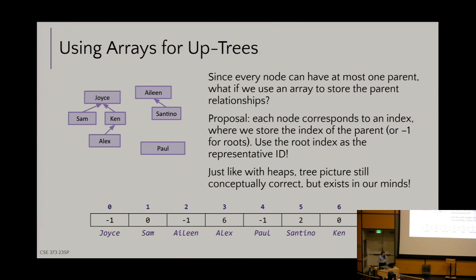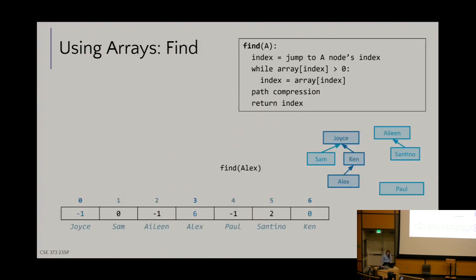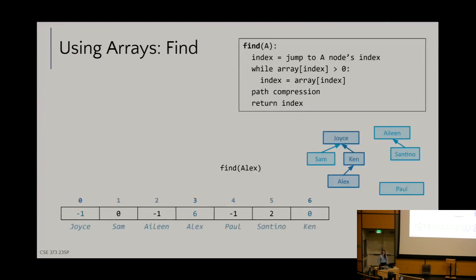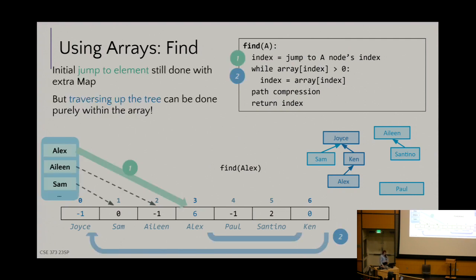For items with no parent — overall roots — we just put a negative number in the array slot. That's how we know we've hit the top of the tree, equivalent to checking if the parent field was null. And we can jam even more information in: instead of just negative 1 to indicate the overall root, we store negative 1 times the weight of that tree. So the negative value encodes both 'I am the root' and 'my tree has this many nodes.'